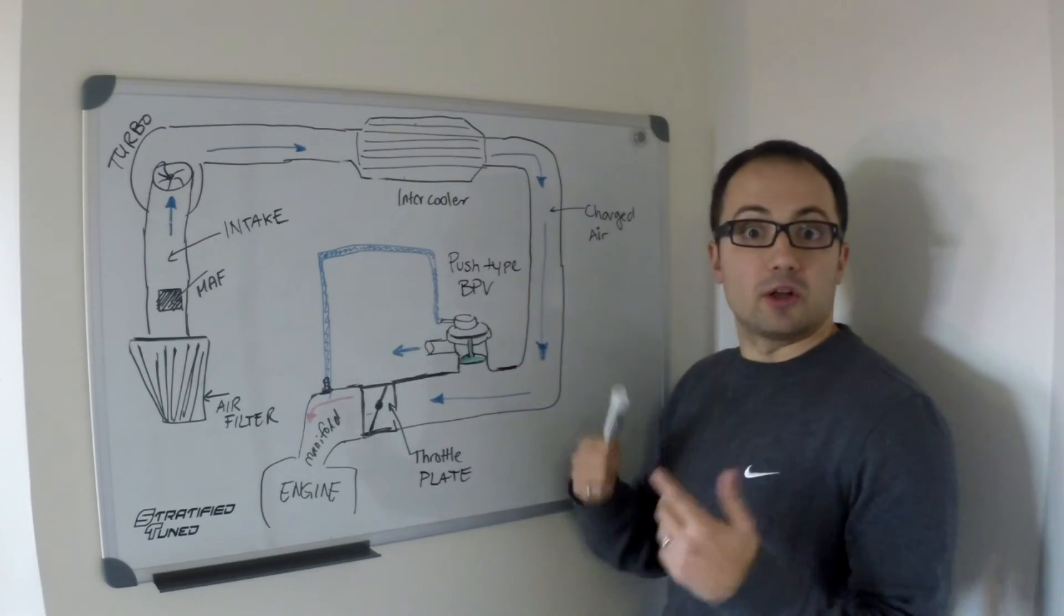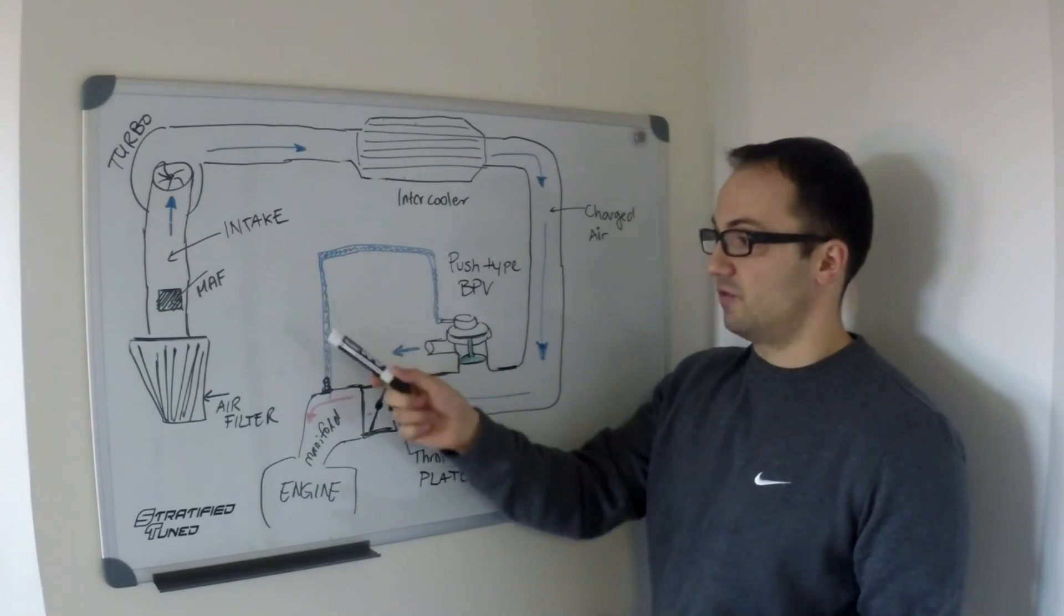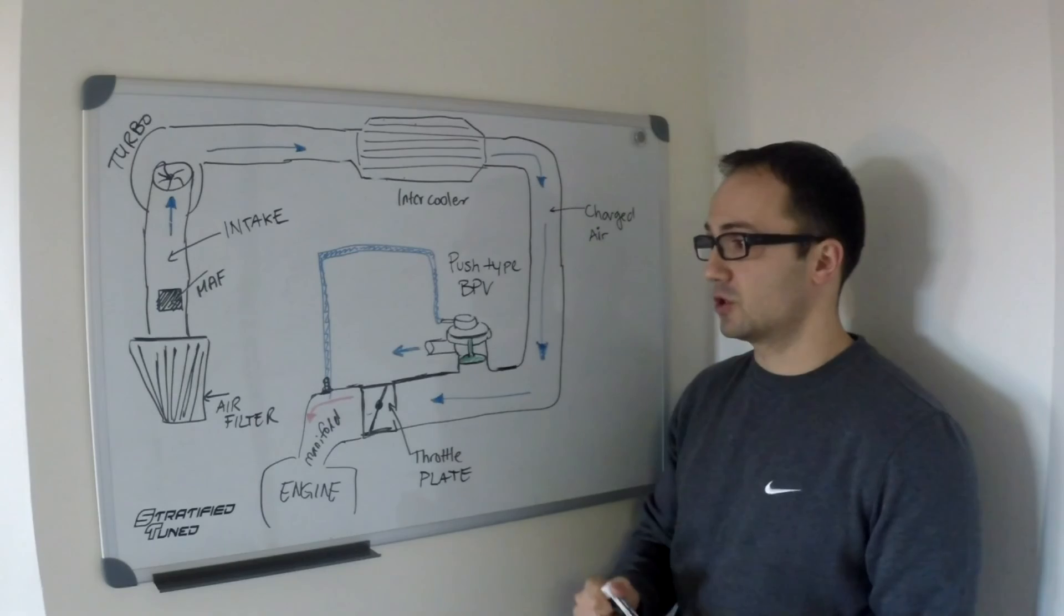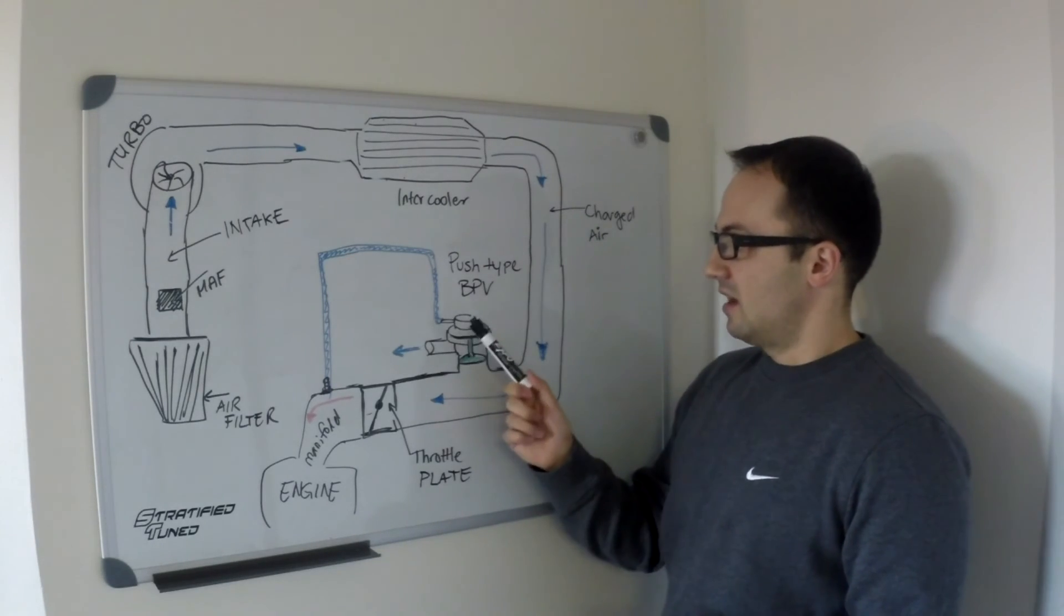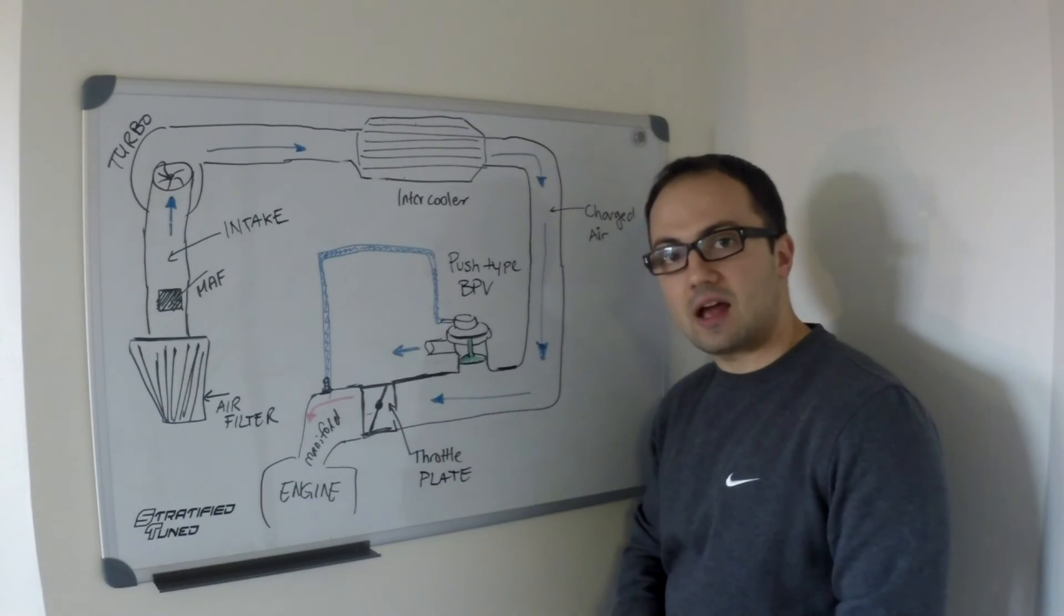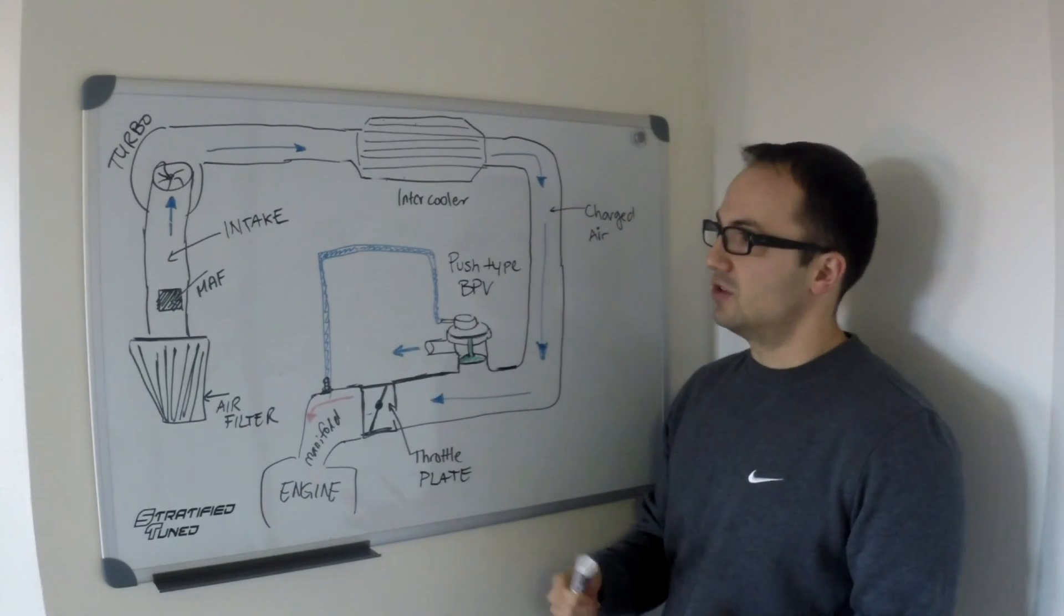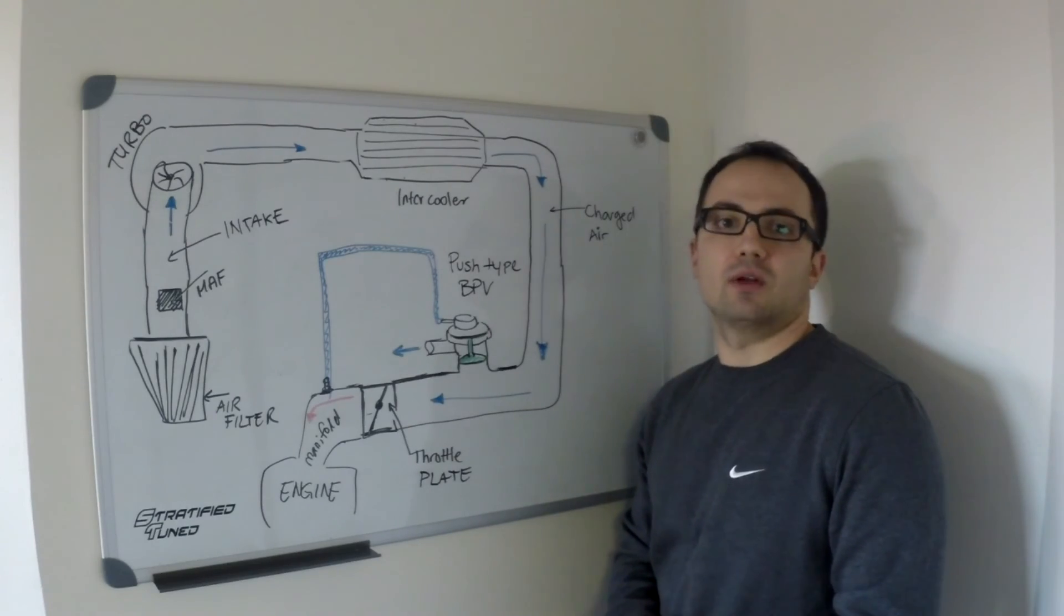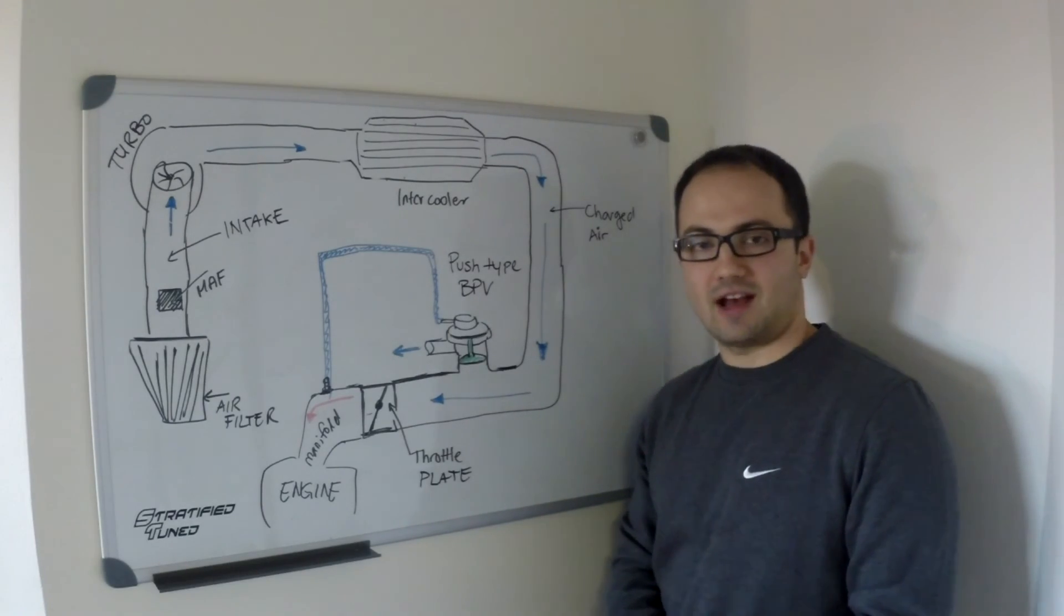the bypass valve or the blow-off valve—usually referred to when it's vented to atmosphere—is a very useful device. It's necessary in street-driven turbocharged cars, and if you do want to release this to atmosphere and have that sound, there is a way to do it, and we're going to discuss that in the following video. Thanks for watching, Alex at Stratify.